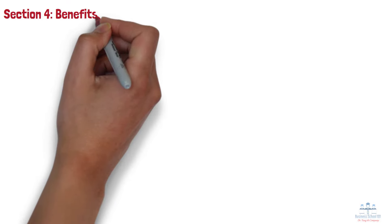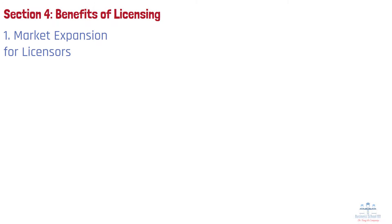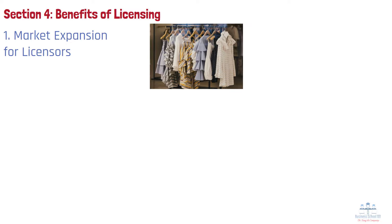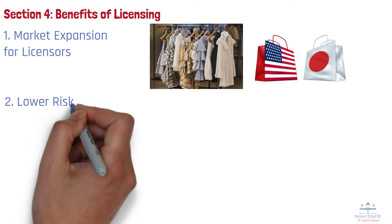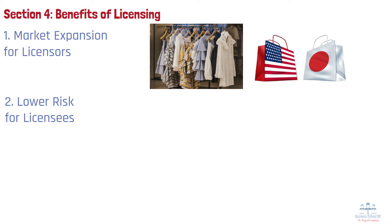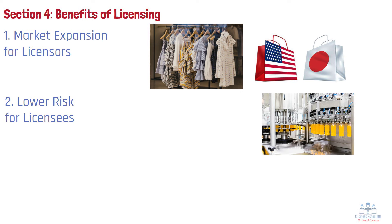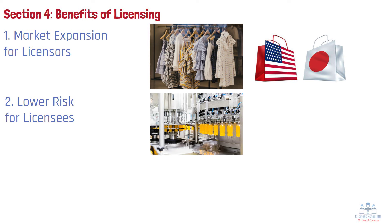Section 4: Benefits of licensing. Licensing offers several benefits for both licensors and licensees. Number 1: Market expansion for licensors. Licensing allows licensors to enter new markets without investing in production or distribution. For example, a U.S.-based clothing company could license its brand to a manufacturer in Japan, allowing it to expand internationally without direct investment. Number 2: Lower risk for licensees. Licensees can access established brands or technologies, avoiding the high cost of development. For example, a small beverage company might license Coca-Cola's formula to produce and sell Coke in a new region, benefiting from the global brand recognition.